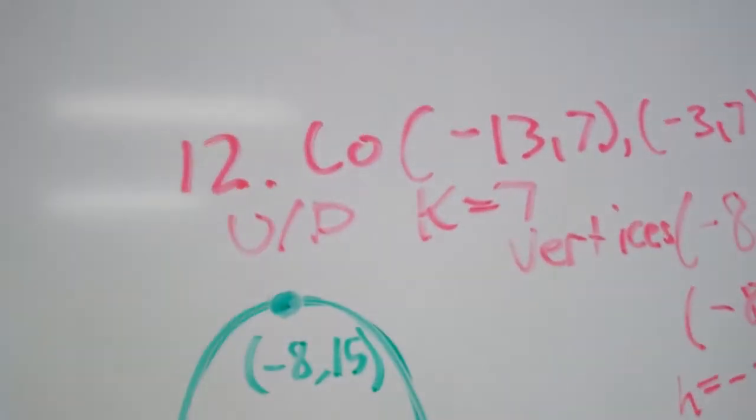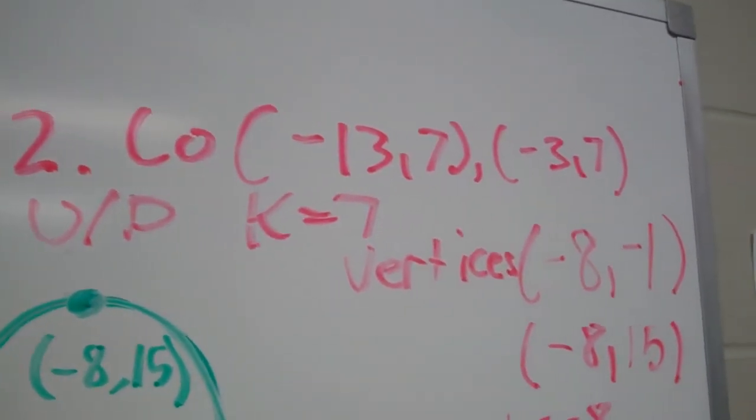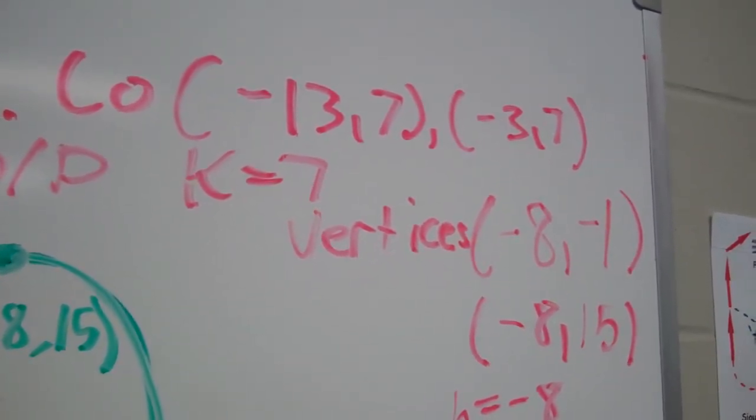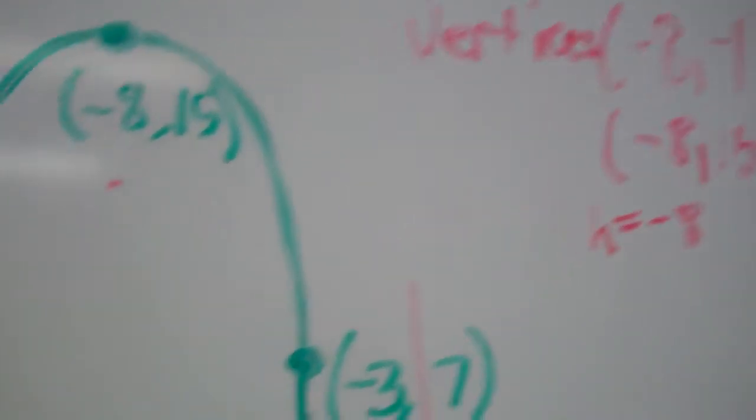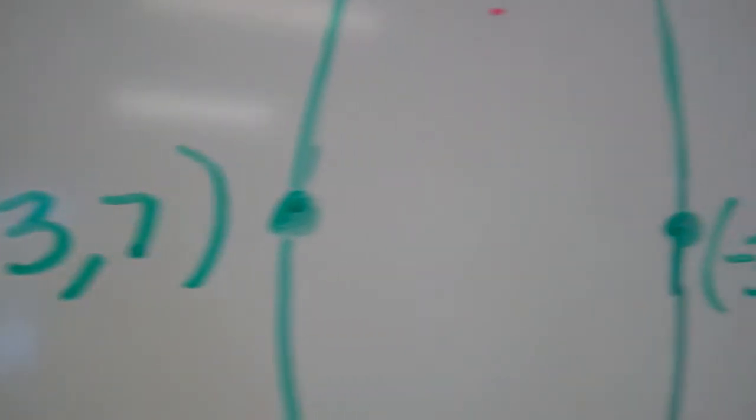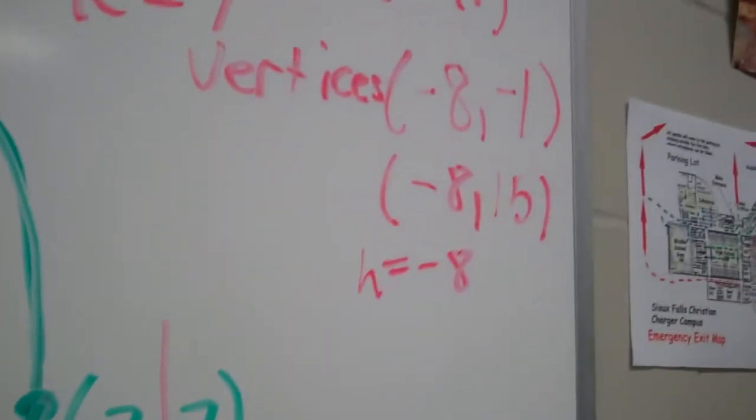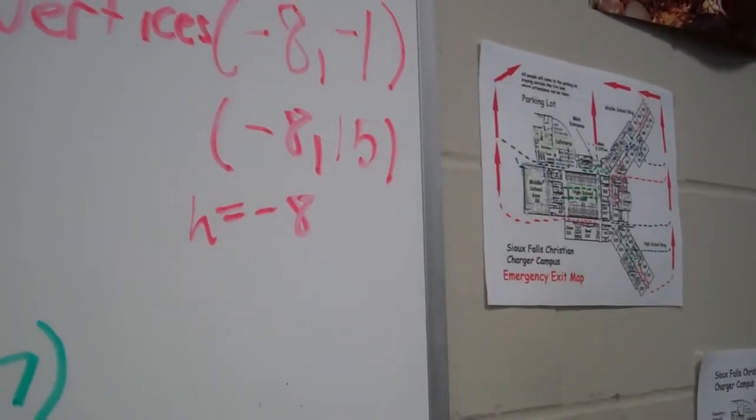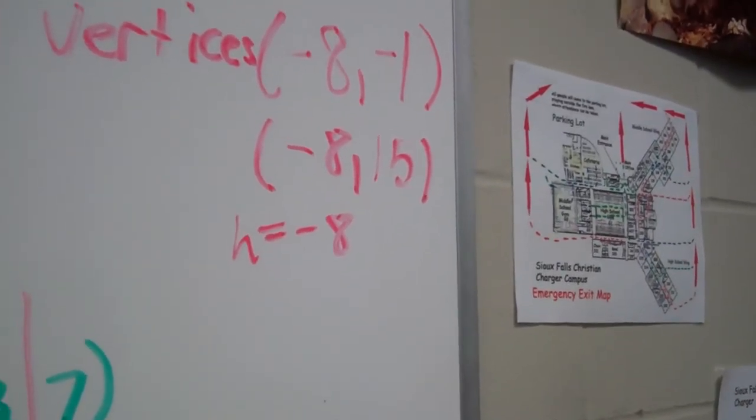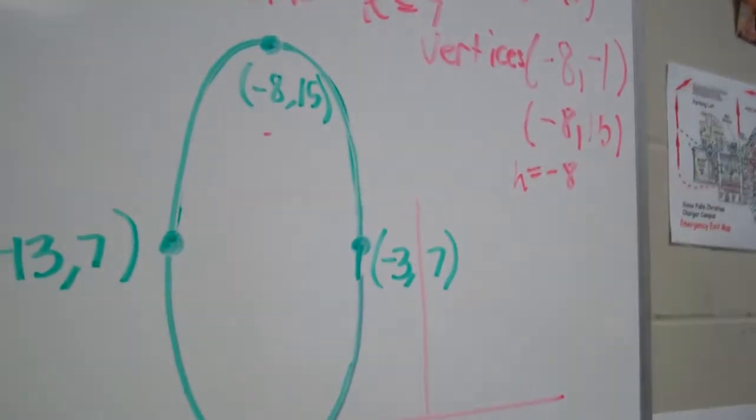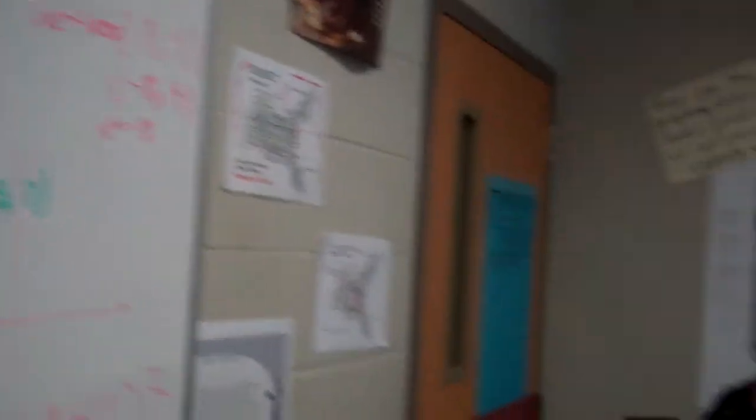Jayden's going to help us here with a little bit of thinking on number 12. On number 12, they gave us covertices negative 13, 7 and negative 3, 7. So he has those on his graph here. But he's going to explain now how he found the vertices. Were they given, Jayden? No. They gave us the major axis. Well, that doesn't really tell you where to put the vertices, does it? No, but it helps figure out where they go, I guess. Oh, sweet. Tell us how you did that.